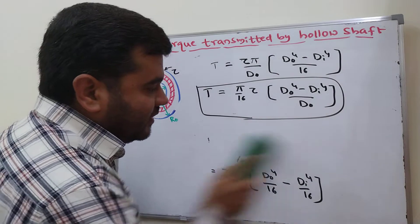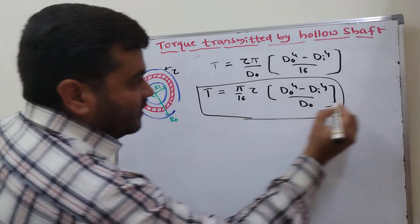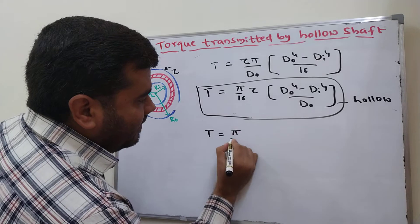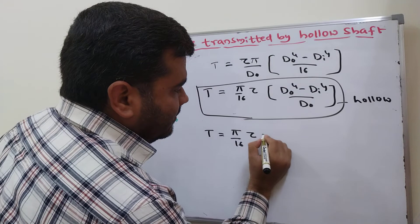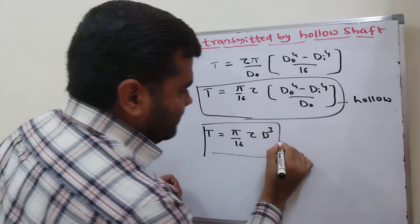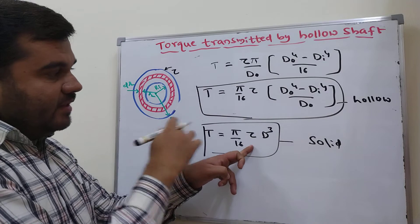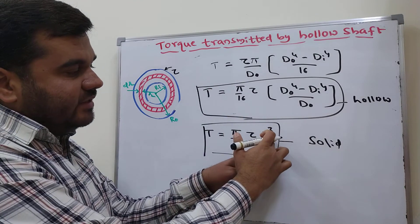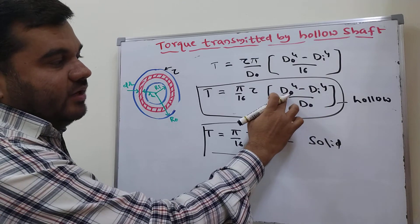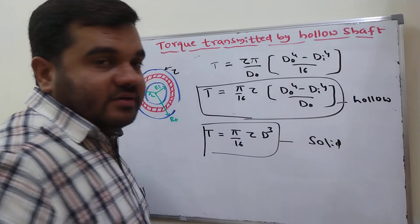So we need to remember the formulas for both the hollow shaft and the solid shaft. For solid shaft: T = π/16 · τ · d³. For hollow shaft: T = π/16 · τ · (Do⁴ − Di⁴) / Do. Pi/16 and τ (maximum shear stress at the outer surface) are the same in both. The difference is that in the solid shaft there is only one diameter d³, while in the hollow shaft we have (Do⁴ − Di⁴) / Do.